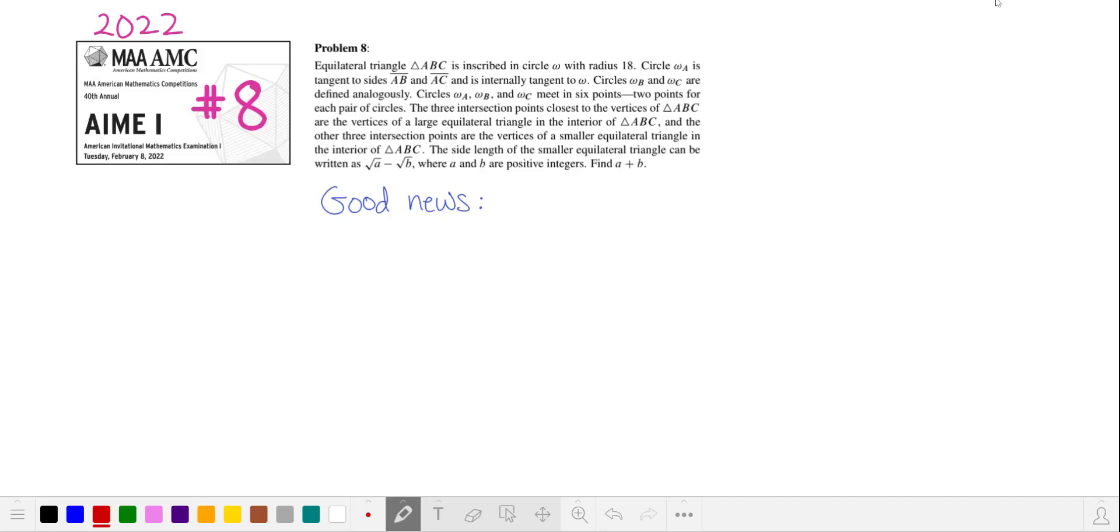The good news in this problem is that we have symmetry in our three circles, omega a, b, and c. So they're probably going to look like our stereotypical Venn diagram overlapping like this. And if we start off by drawing our three overlapping circles, it's easier to see that the three intersecting points of our smaller equilateral triangle are these three.